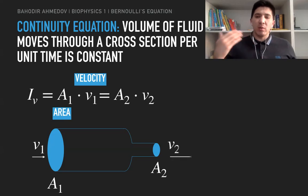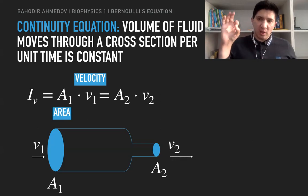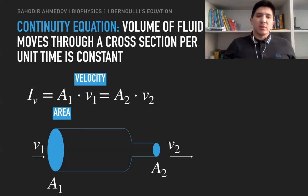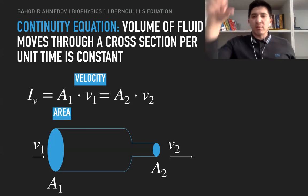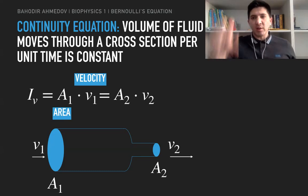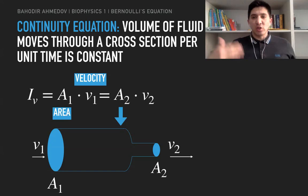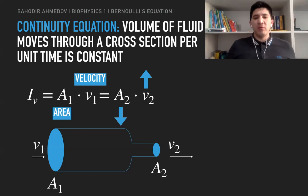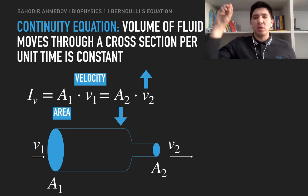This is going to be the same at the end — equal to the multiplication of the cross-section area by the velocity. So since we decrease the cross-section area, and since the multiplication should be the same as in the beginning, then the velocity should be higher. So if we decrease the cross-section area, then the velocity is going to be higher.